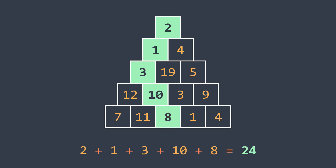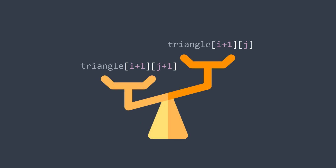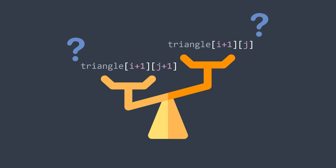But the problem is that 24 is not the minimum path sum, because we found 15 by taking a different path, which means that this method doesn't always work. Always going to the smaller adjacent cell doesn't guarantee the minimum path sum — the solution is not valid. Considering that a smaller adjacent cell will lead to the minimum path sum is an incorrect assumption, as we've seen.